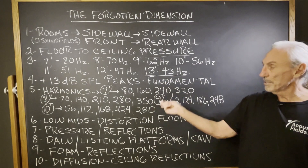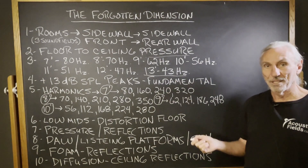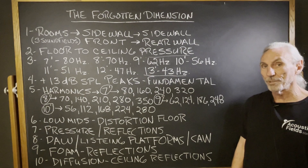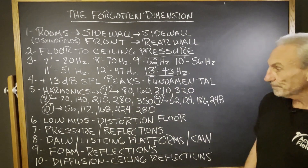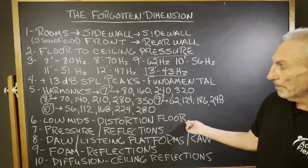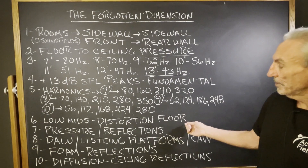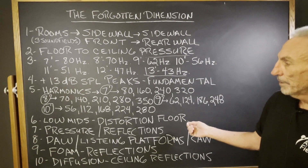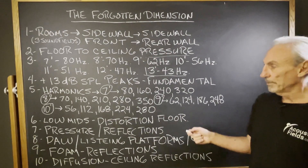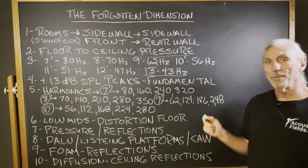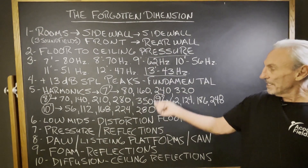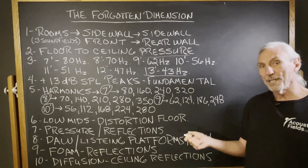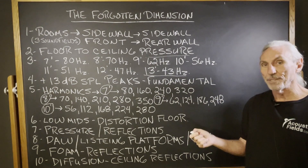These are frequencies that are in everything. So you've got to really consider treating that floor to ceiling dimension. We want to lower the low mids, the distortion on the floor, the noise floor. We have to be really careful because these frequencies form the basis for everything else that happens afterwards.